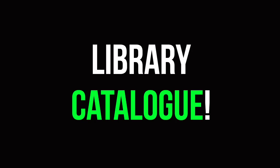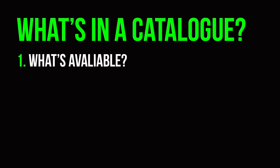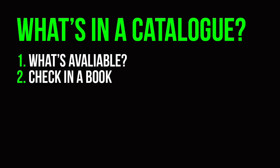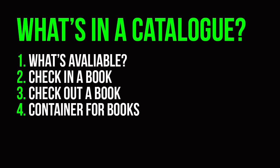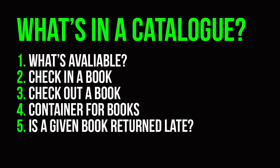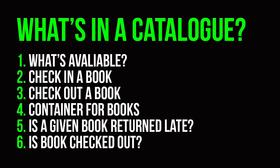We are going to be making a library catalog. Basically, you go to a library and you look online, you see what books are available — that's what we're going to be making. A user can check in a book, check out a book, return a book. We're going to have like a database of all of our books. We'll also be able to tell if a book is late — if you returned a book and it's late, we know you owe us some money. We'll print out that you owe us some money, and we'll also be able to tell the user that a book is already checked out.